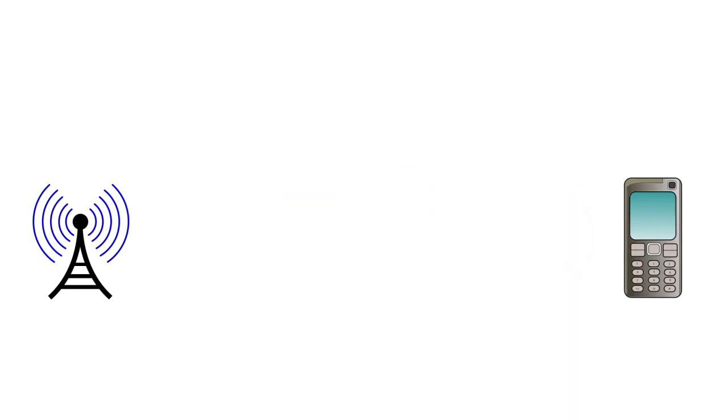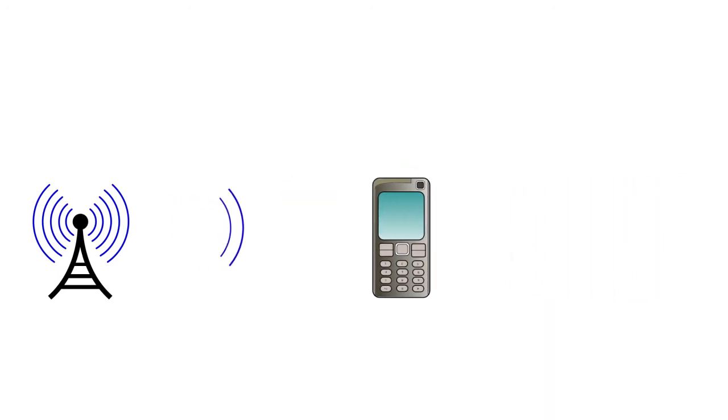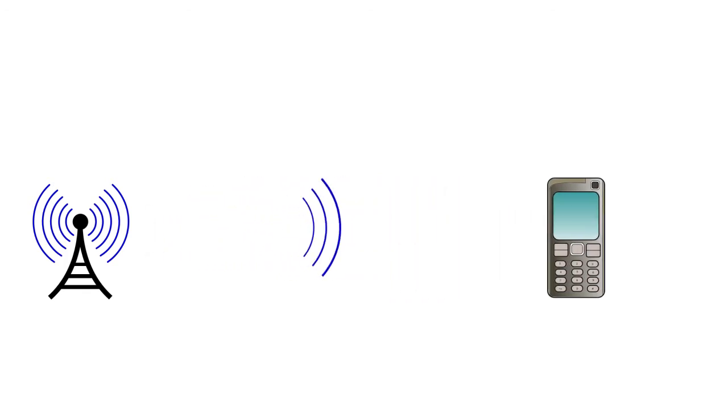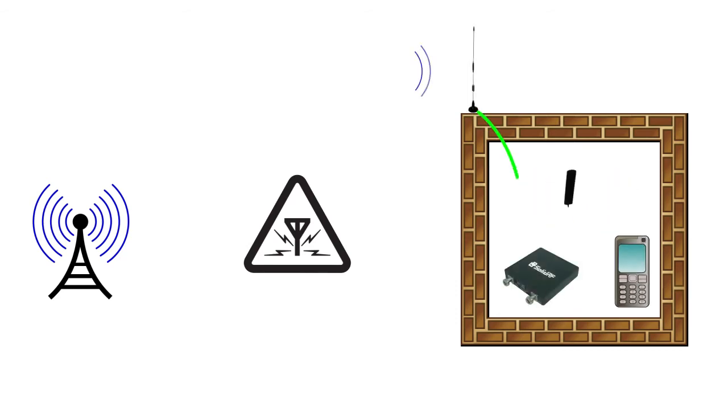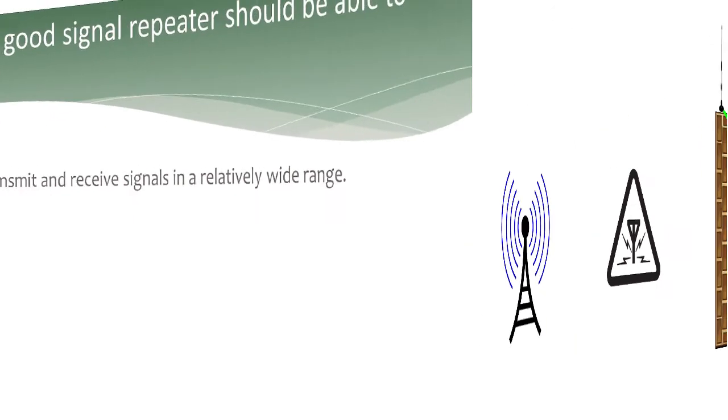Our cell phones pick up signals from nearby base stations. However, if the signal tower is too far away, or there is an obstruction or some other form of interference, your cell phone will have bad reception. In this case, a signal repeater will pick up weak signals, amplify them, and broadcast them to your mobile phone.